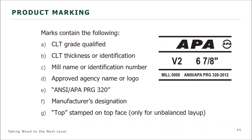All wood products should have correct product stamping or marking when they arrive at the job site. A product marking tells you where it came from, who milled it, what grade it is, how thick it is, and the approving agency. This example shows a V2 grade and six and seven-eighths thickness, the mill, and the manufacturing standard ANSI/APA PRG 320.